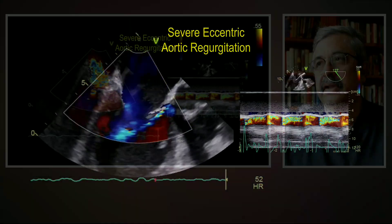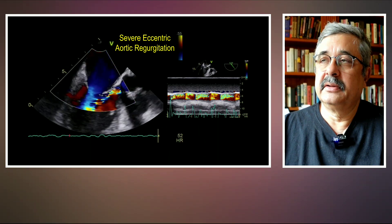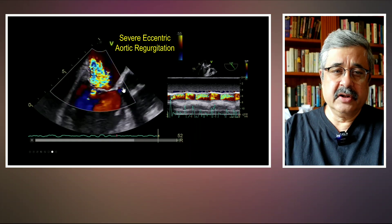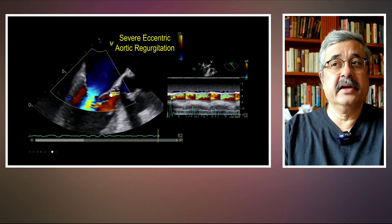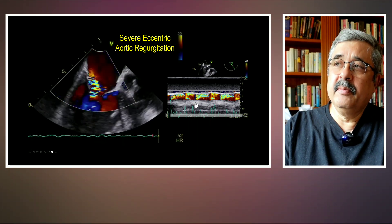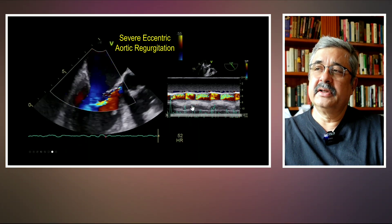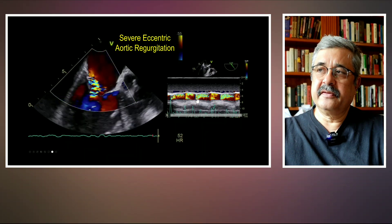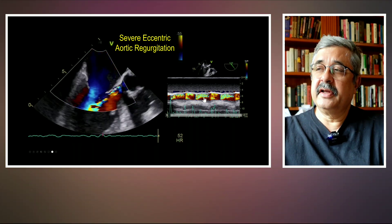The diagnosis in this specific case is severe eccentric aortic regurgitation. As you can see in the mid-esophageal long axis view, this is the aortic insufficiency jet, which is eccentric and directed anteriorly, hugging or striking the anterior mitral leaflet. This is very obvious on the M-mode through the LVOT with color flow Doppler. This is the aortic ejection phase, and this is a holodiastolic regurgitation which fills more than 50% of the LVOT.